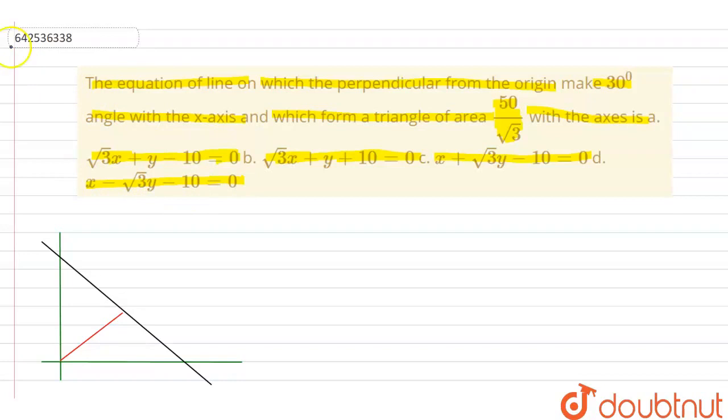So now, we are given that this is our x-axis and this is our y-axis. And there is a perpendicular from the origin, so this is a perpendicular denoted by the red line, and it forms an angle of 30 degrees with the x-axis.